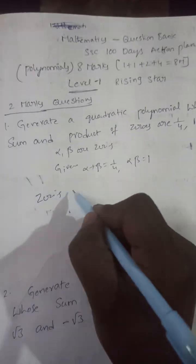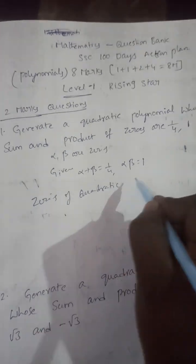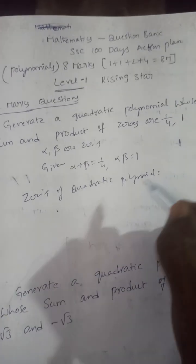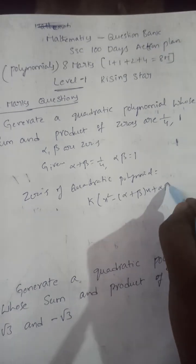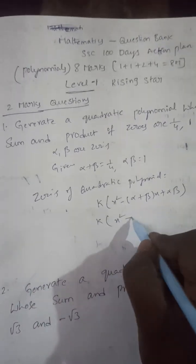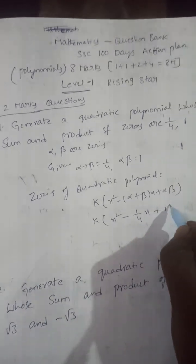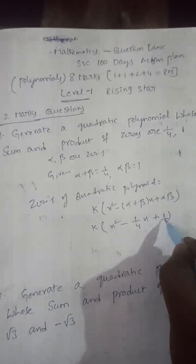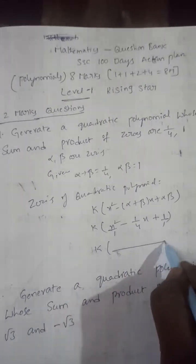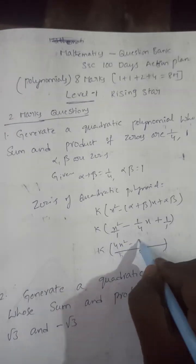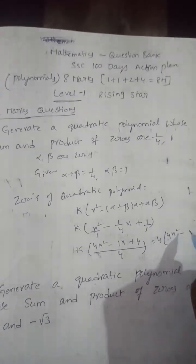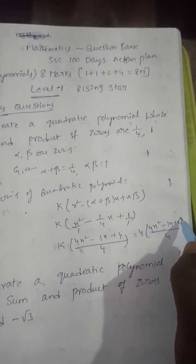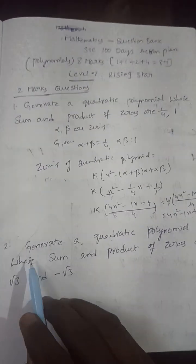The general form for zeros of a quadratic polynomial is k times (x squared minus (alpha plus beta)x plus alpha·beta). Substituting: k(x² − (1/4)x + 1). Taking LCM of the denominator as 4, we get k(4x² − x + 4)/4. Setting k equal to 4, the polynomial simplifies to 4x² − x + 4.